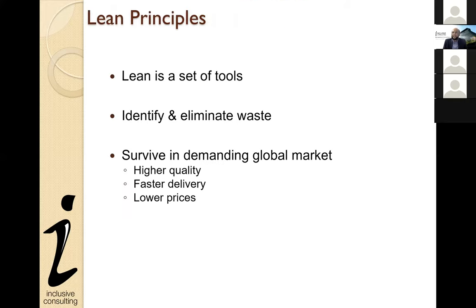Lean Six Sigma can be described in one phrase: it is a structured and systematic way to solve problems. It provides a set of tools within a structured methodology to ensure that problem-solving comes up with practical, realistic, and sustainable solutions. Implementing those tools properly results in higher quality products and services that can be delivered to customers more effectively, efficiently, and at lower cost — improving profitability.